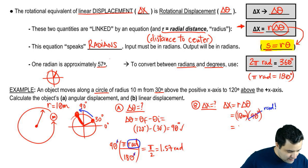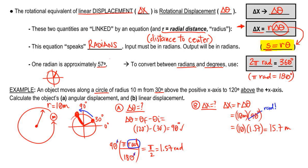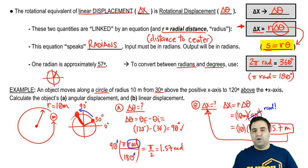So now I can plug this in here. 10 times 1.57. And the answer will be 15.7 meters. Why is it meters? Because meters is the unit of delta x. So that's it for this one. Hopefully it makes sense. Let me see you in a minute if you guys have any questions.